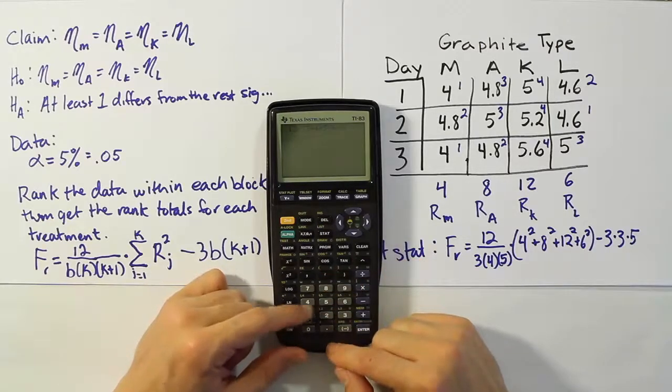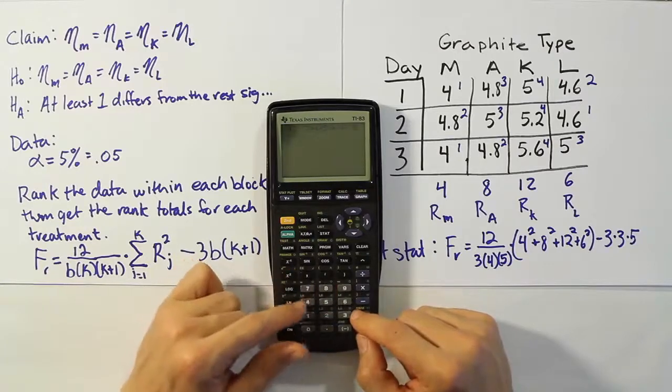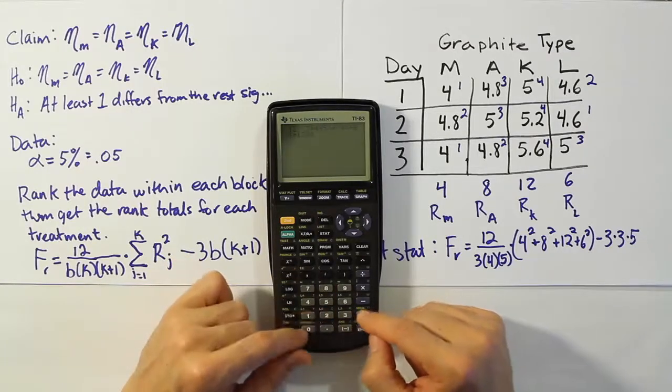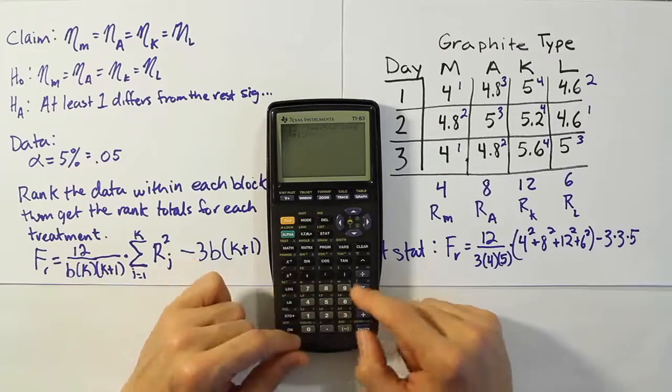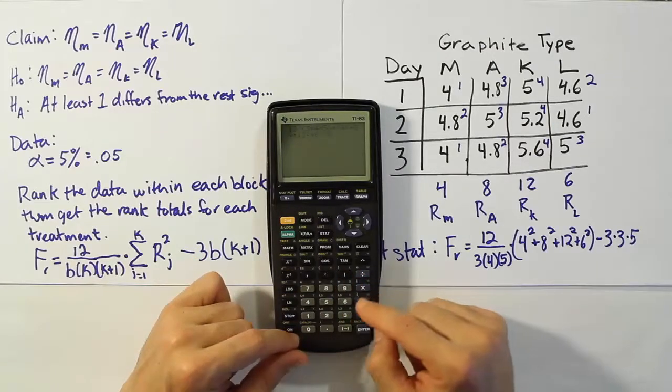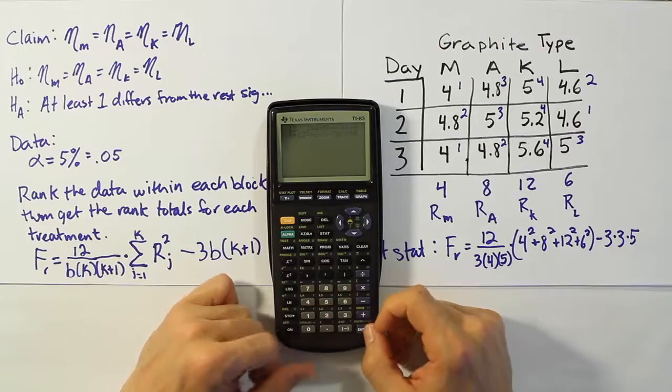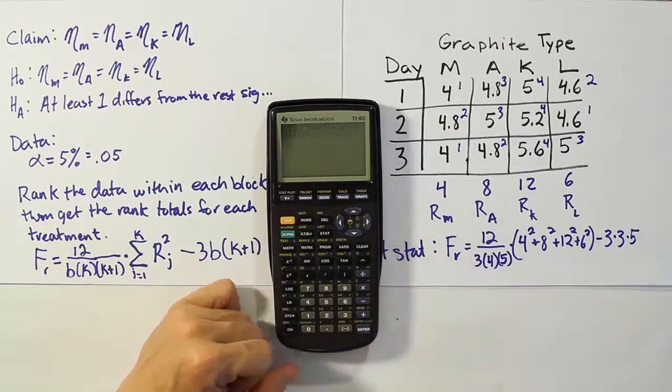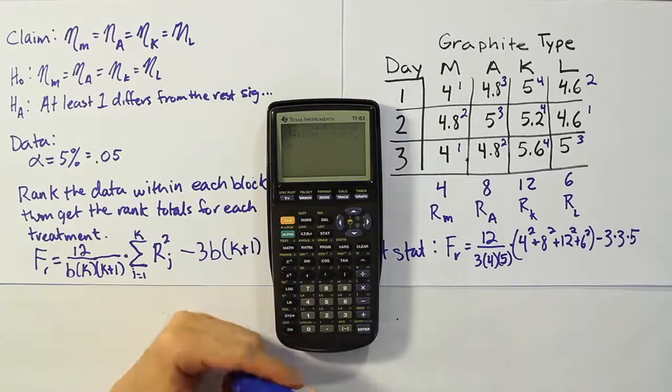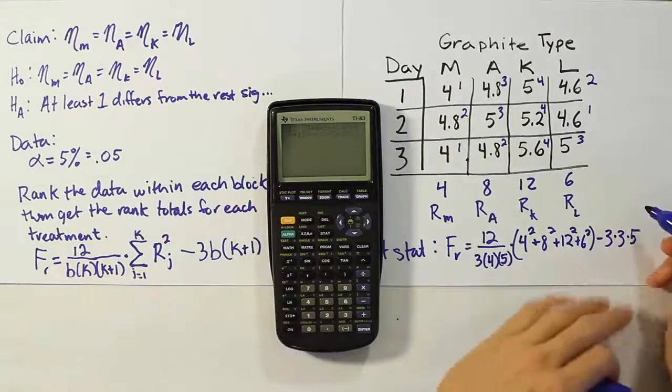Then times, it'll be four squared, plus eight squared, plus twelve squared, plus six squared. Close the parenthesis up, and then do minus three times three times five. Okay, and when you're done, you get the answer, seven. Okay, so our test stat works out to be exactly seven.